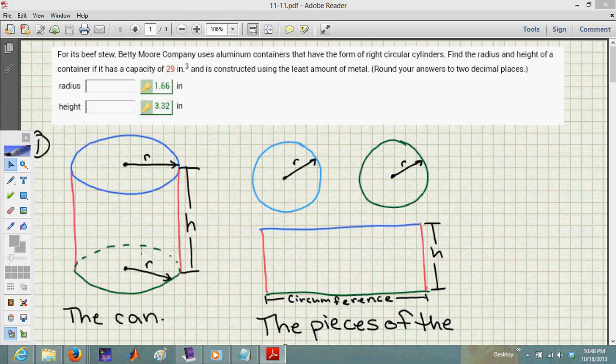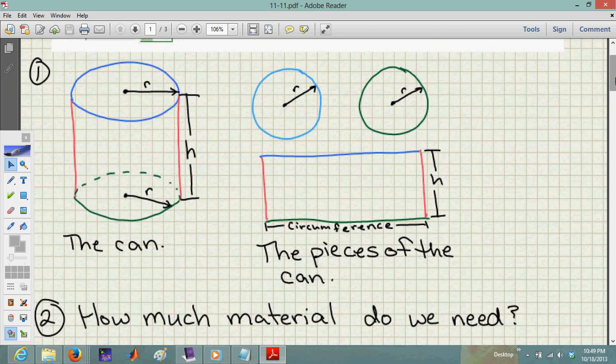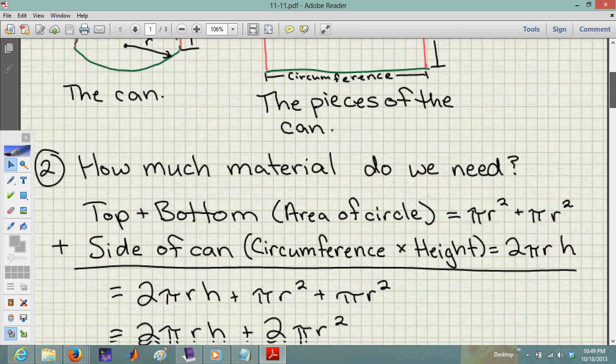I've got a can with a top, bottom, and sides. The top and bottom are circles with the same radius. The side turns into a rectangular shape - if you cut open the side and rolled it out, it would be a flat rectangle with the height of the can, and the length would be the circumference of the circles. So we have a picture of the can and the pieces of the can, which we need to figure out how much material we're using.